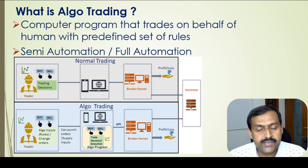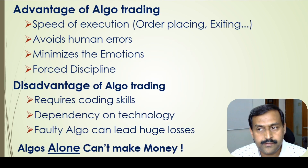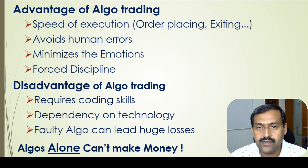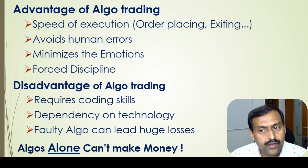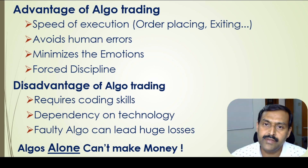Based on the type of algo you designed, it is also possible to change the inputs supplied to the algo while it is running — for example, you can change the stop loss or the target. The algo makes all the decisions such as when to enter and when to exit based on the inputs you have provided. The advantages of algo trading are the speed of execution in placing and exiting orders, making decisions very fast. It avoids human errors and minimizes emotions. Once you start the algo program, it takes care of everything — you know your max loss and max profit, which brings a lot of discipline to trading.